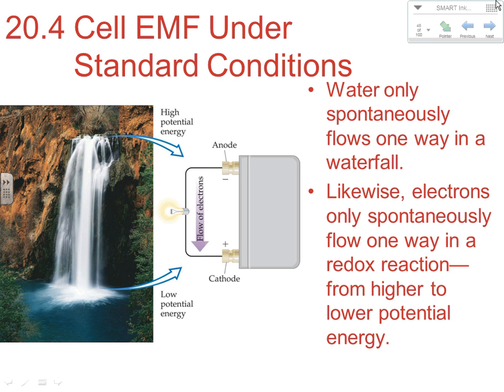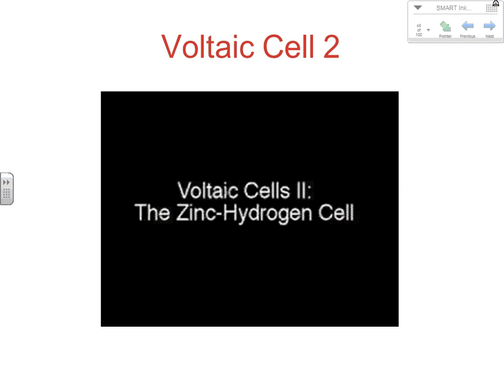Some redox reactions require energy to occur. Those are known as electrolytic cells. When we're talking about voltaic or galvanic cells, those are situations where we're going to get a spontaneous flow of electrons.